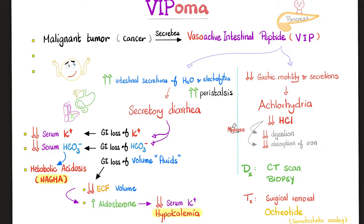How do you diagnose this tumor? History and physical exam, lots of labs for fluids and electrolytes, and you can visualize the tumor with ultrasound, CT scan of the abdomen, or MRI. The most accurate is always a biopsy. For management, as with any tumor that secretes too much, you can remove the tumor. You can also give octreotide, which is a somatostatin analog — somatostatin inhibits everything, it's a universal inhibitor, so it will inhibit the release of VIP.